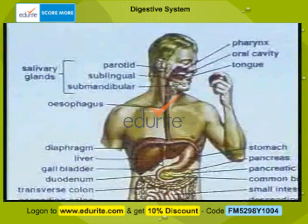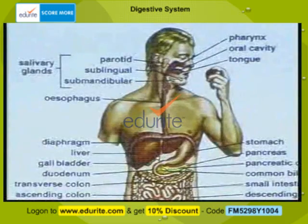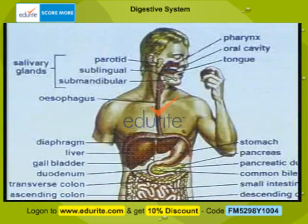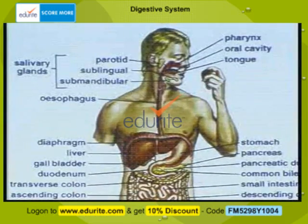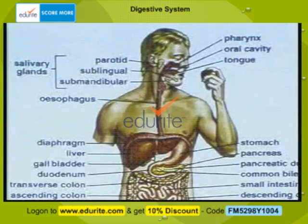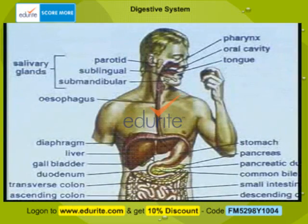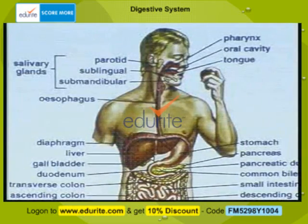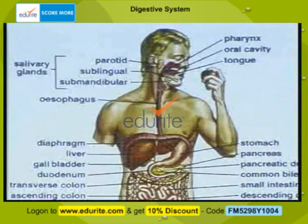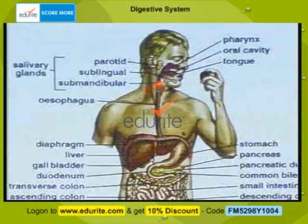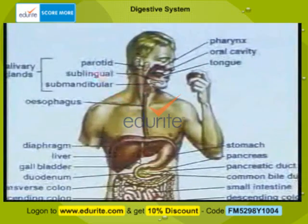The teeth break down the food mechanically — that is, we chew the food. Once the food is chewed, it is mixed with saliva. Only the digestion of carbohydrates is initiated in the mouth: ptyalin converts polysaccharides into a disaccharide, that is, starch is converted into maltose. Then with the help of the tongue, the food is rolled into a bolus, and it passes through the esophagus aided by a wave-like motion called peristaltic motion.